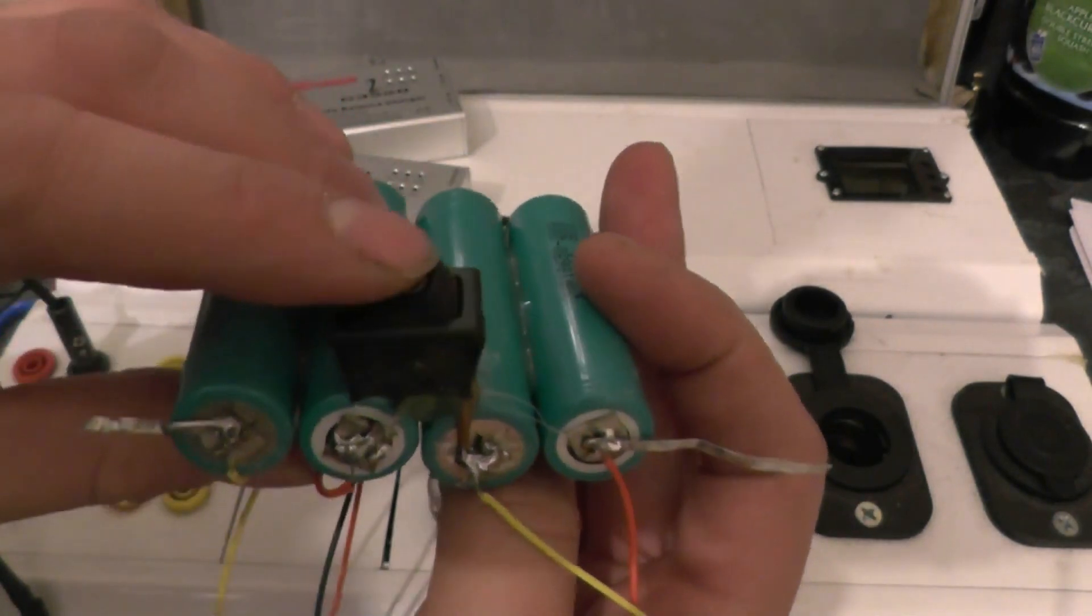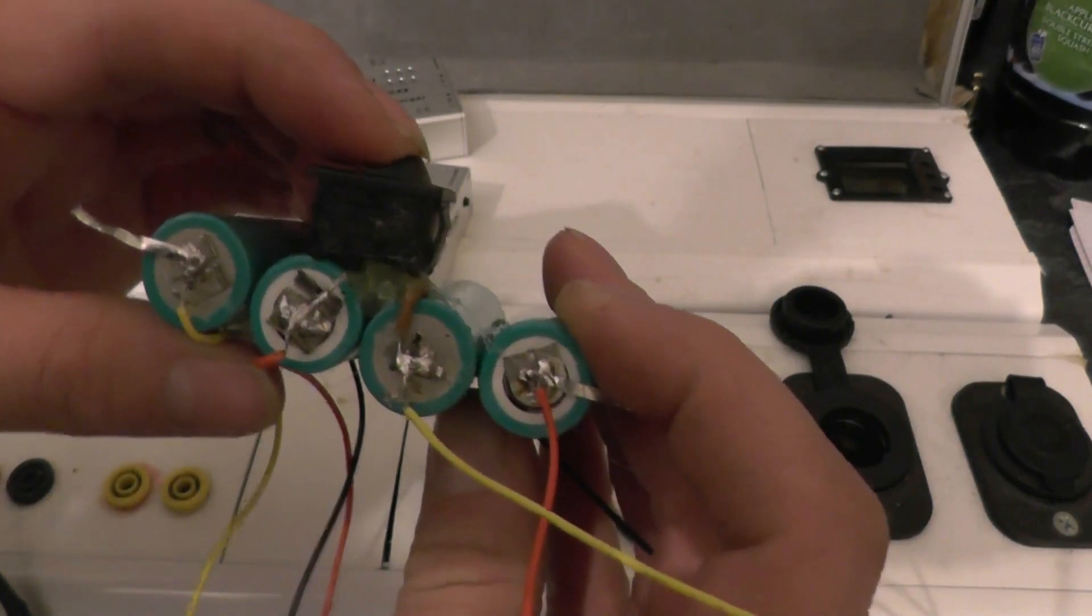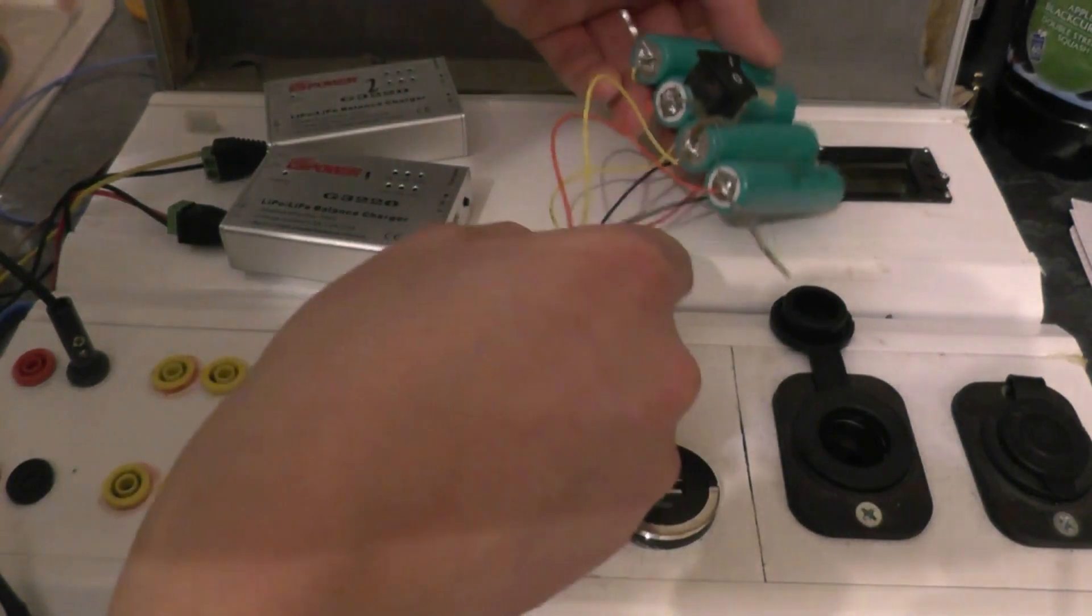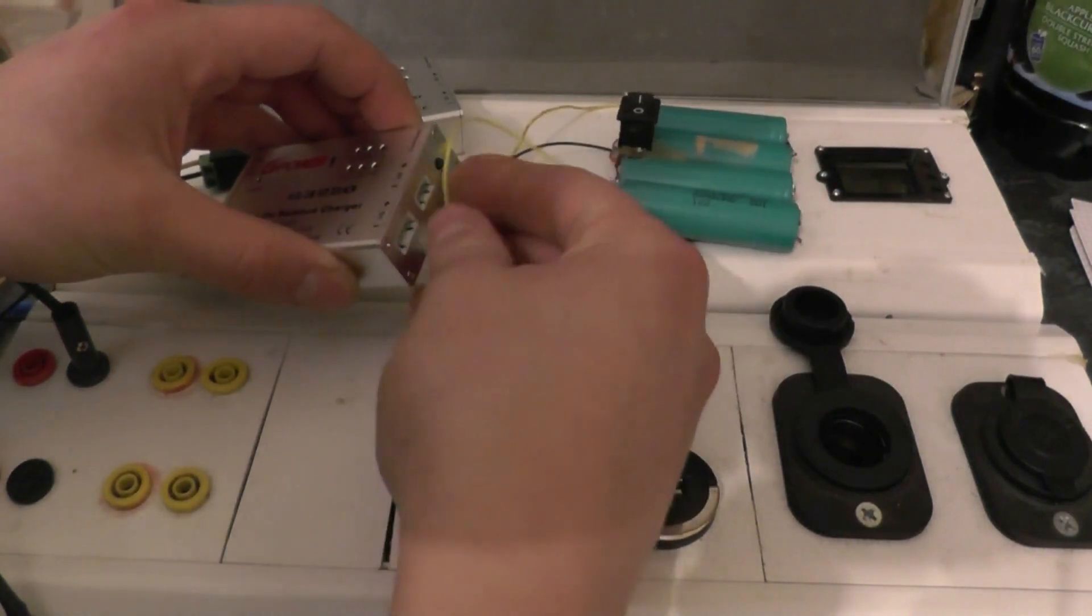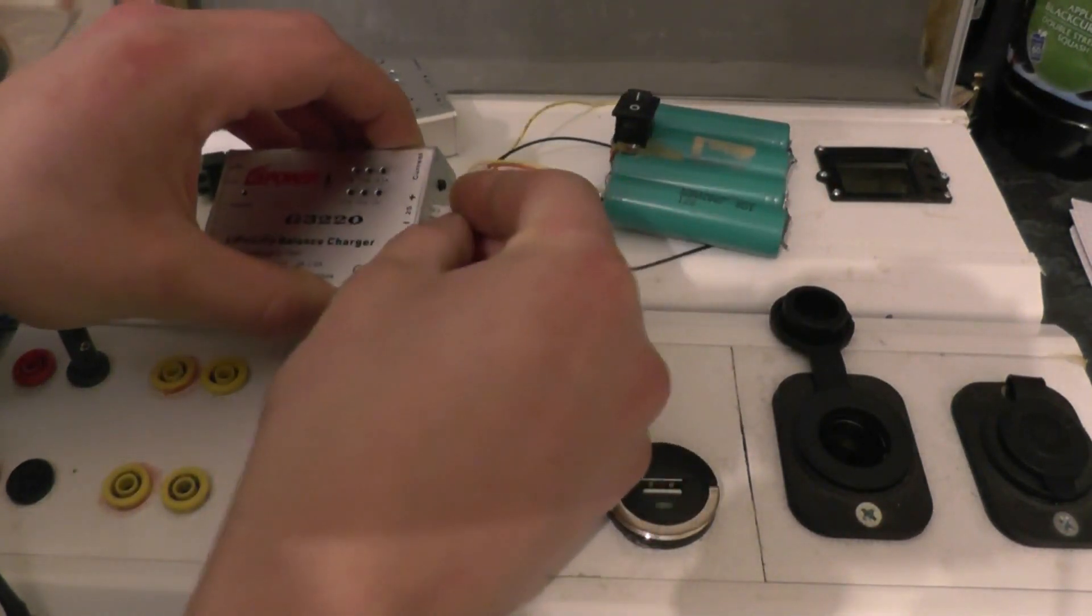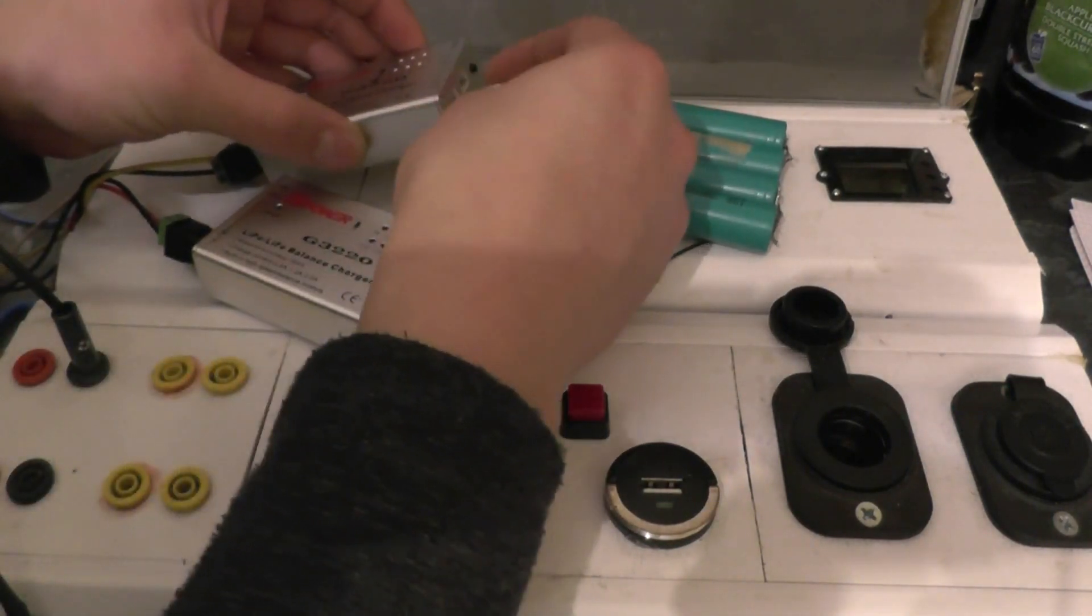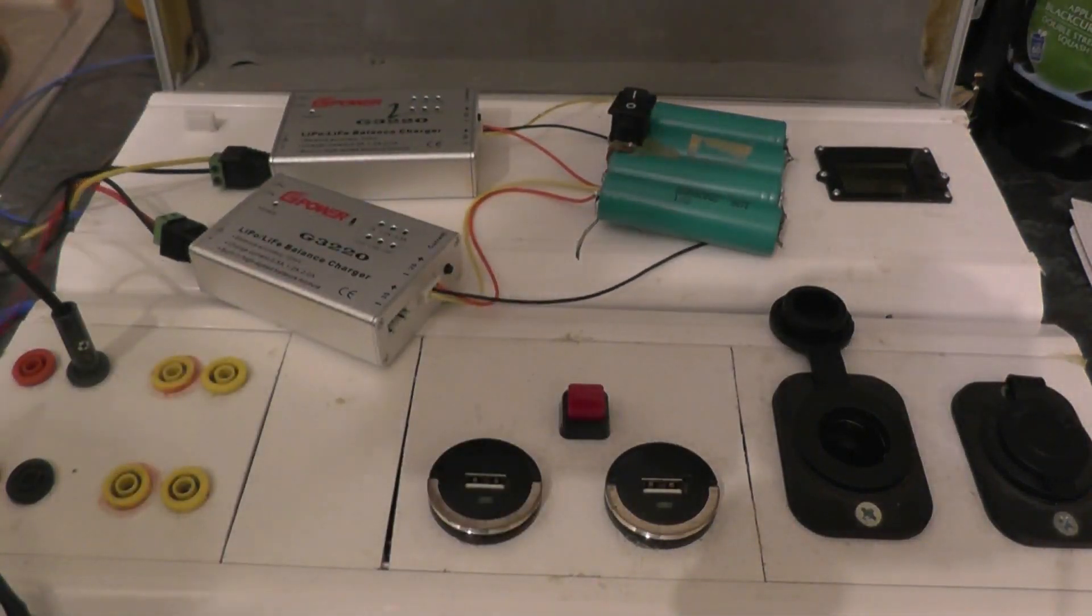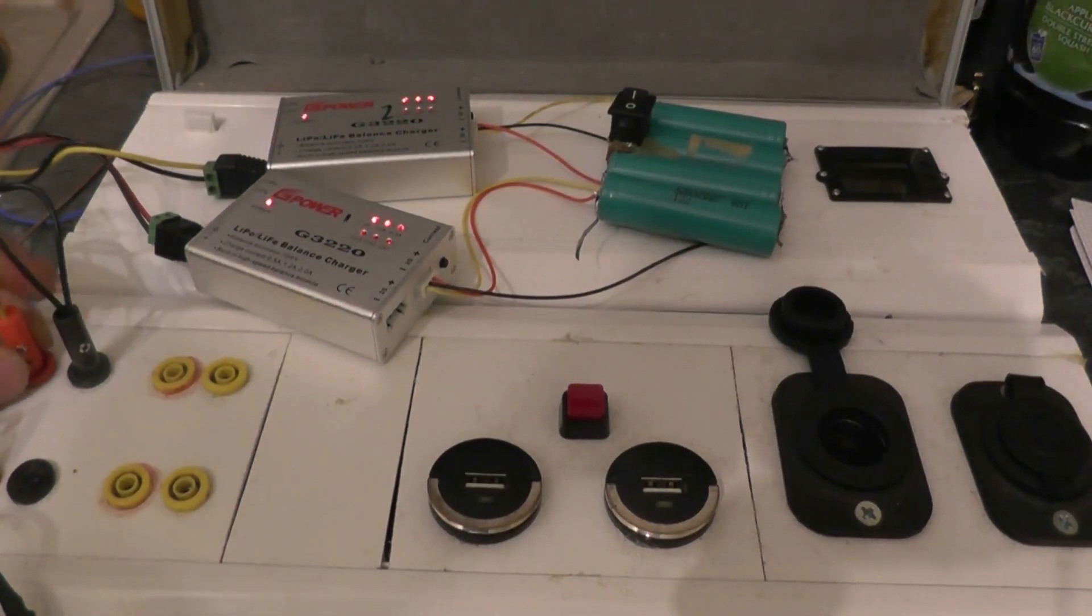Now with the switch in the on position, it will give you 16.8. And with it off, you should be able to charge it properly through these chargers. So basically, I'm going to plug these in into the two cell slots. I'm then going to plug in the lead.